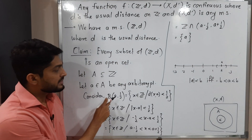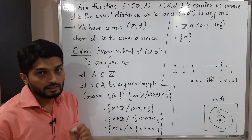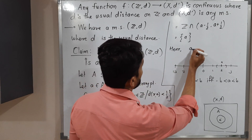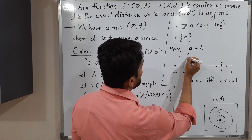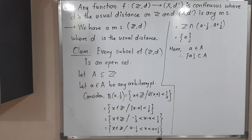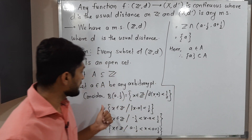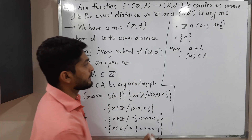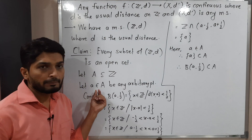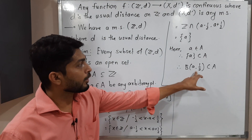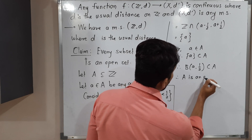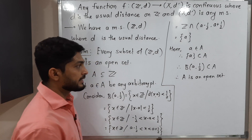So we have proved: if we consider a ball with center a and radius 1/2, it is nothing but the singleton set {a}, meaning only the center of that ball. Since we started with a belonging to capital A, we can write {a} ⊆ A. But we just proved that the singleton {a} equals the ball B(a, 1/2), so B(a, 1/2) ⊆ A. We started with any arbitrary element of A and found a ball with center a and radius 1/2 that is a subset of A. Therefore, A is an open set — A satisfies the definition of an open set.